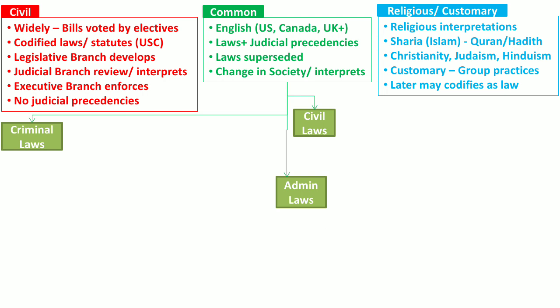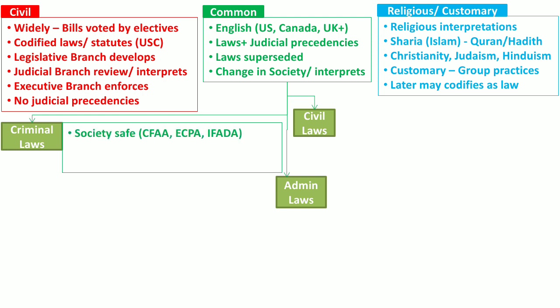In the common legal system, there are three types of laws: criminal law, civil law, and administrative law. The objective of criminal law is to protect the society and keep it safe. In the United States, the Computer Fraud and Abuse Act, the Electronic Communication Privacy Act, and the Identity Fraud and Adoption Deterrence Act are examples of criminal laws. The penalties for violations of criminal laws include community service, imprisonment, financial fines, or death penalties in case of grave violations.